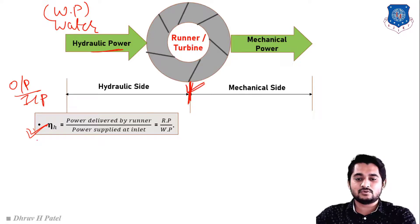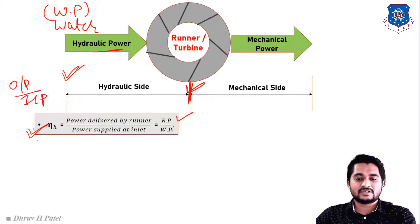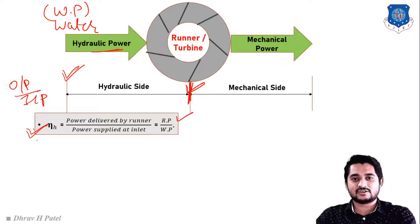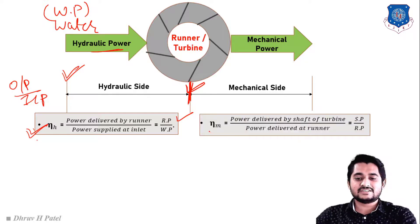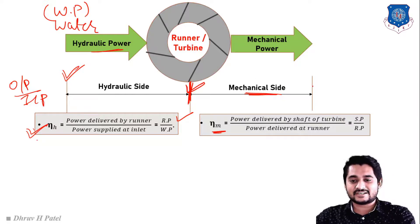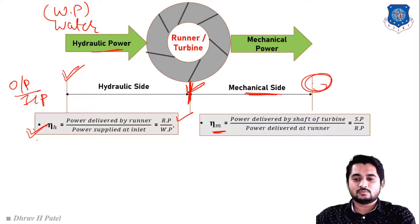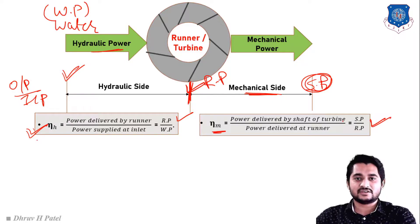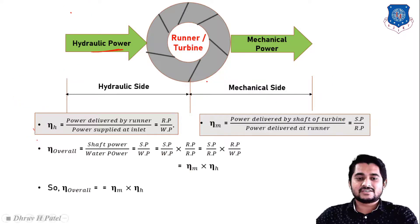Hydraulic efficiency: efficiency is output divided by input. For the hydraulic section, output is runner power and input is water power. So hydraulic efficiency = runner power / water power. Mechanical efficiency: on the mechanical side, output is shaft power and input is runner power. So mechanical efficiency = shaft power / runner power.